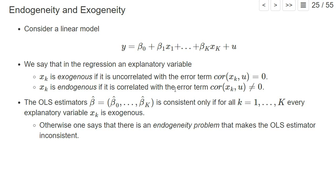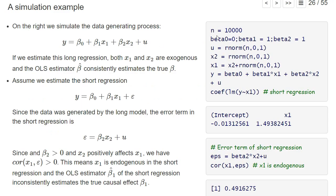Let's illustrate this with a simulation example, essentially the same simulation as before but now using beta notation. y is given by beta_0 plus beta_1·x_1 plus beta_2·x_2 plus u, simulated with 10,000 observations, where beta_1 and beta_2 are both one. u is a standard normal error term, x_2 is also drawn from a standard normal distribution, and x_1 depends on x_2 — it's positively affected by x_2 plus some additional standard normal noise.